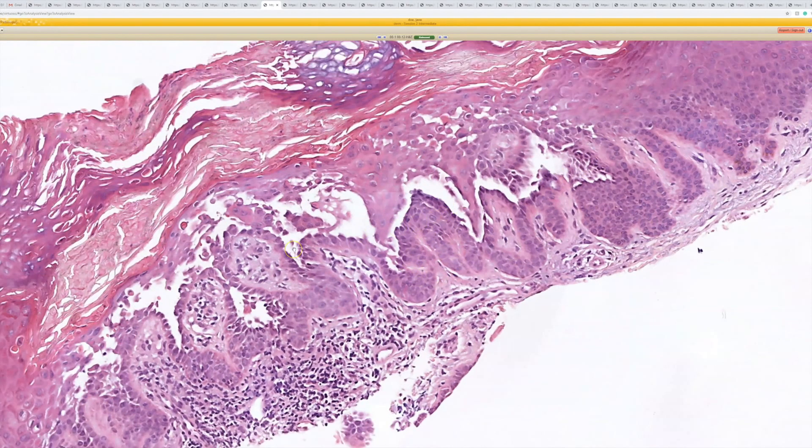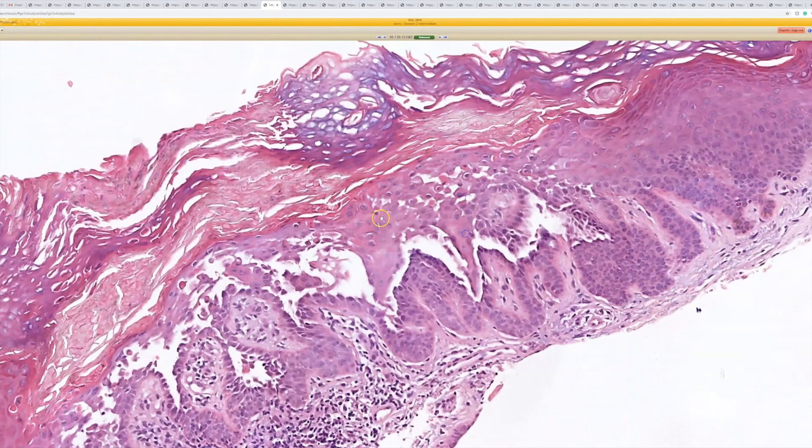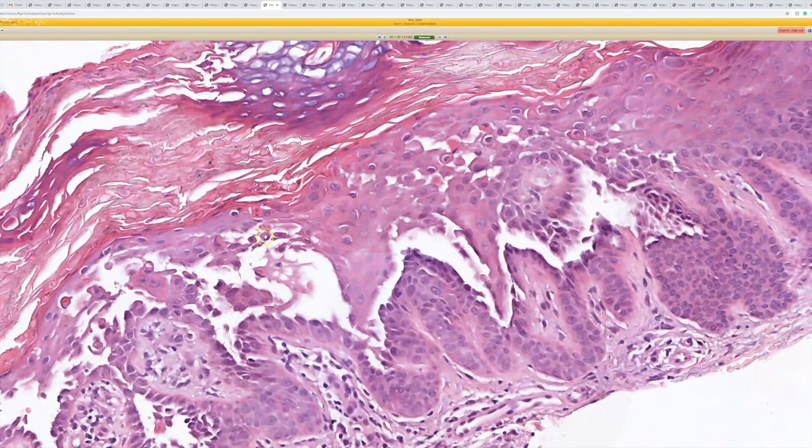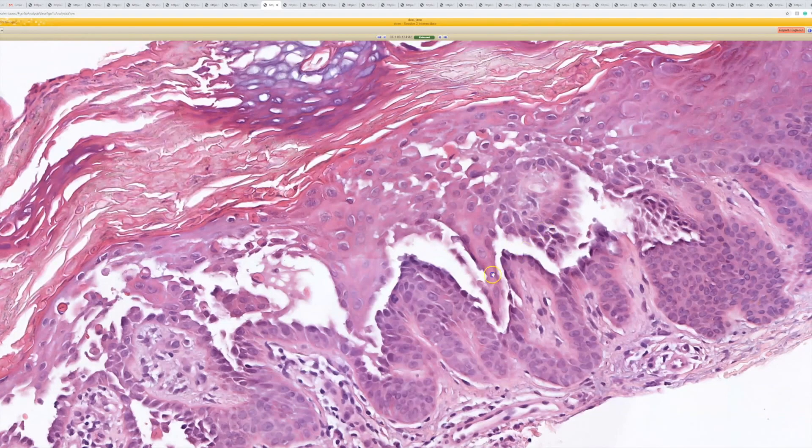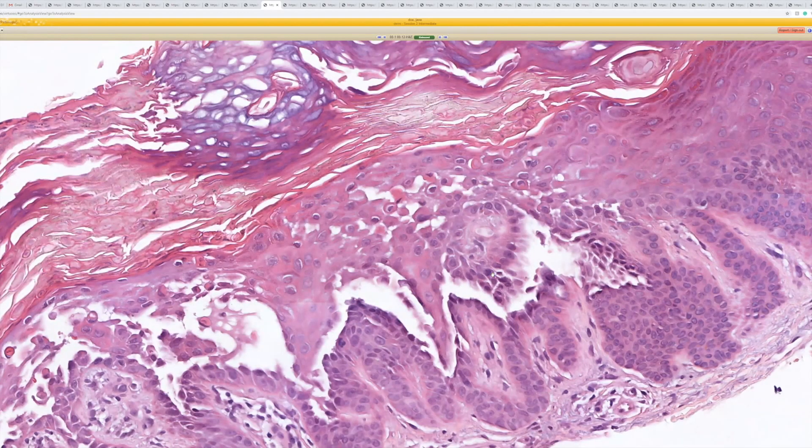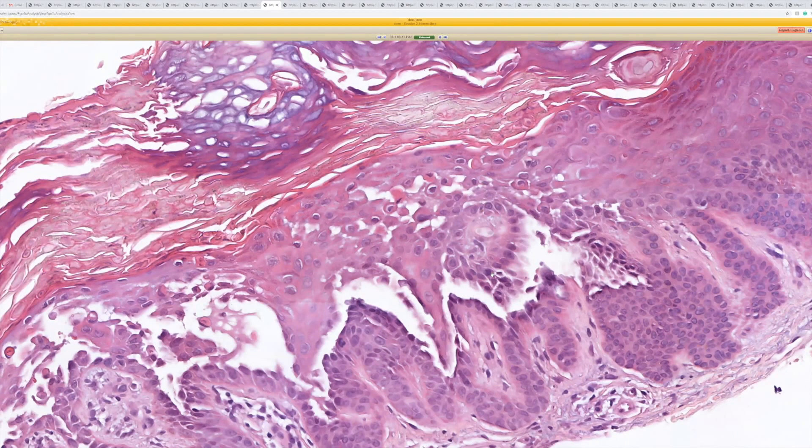You can certainly also see dyskeratotic cells, like eosinophilic corons. I think if it was just more invaginated I would call it a tiny little warty D. In this case, if it is like an isolated single lesion, you can call it an acantholytic dyskeratoma.